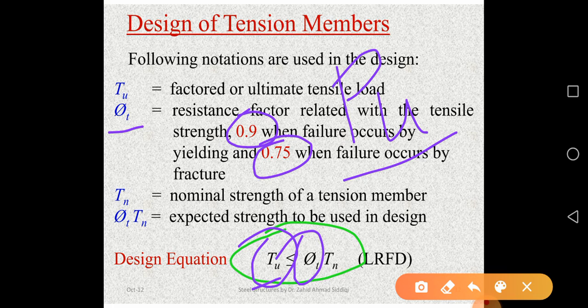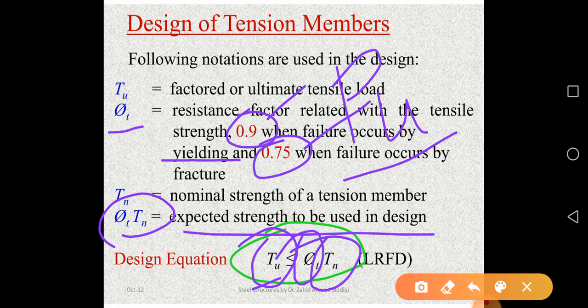φt equals 0.9 when we are talking about yielding failure, and φt equals 0.75 when we are talking about fracture — this is according to the AISC Design Code D2, which we have already covered in previous tutorials. And Tn is the nominal strength of the member. Combined, φt multiplied by Tn is the design strength, also called expected strength.